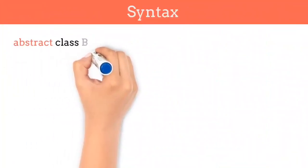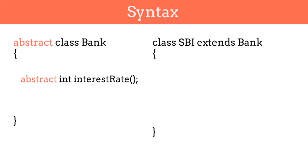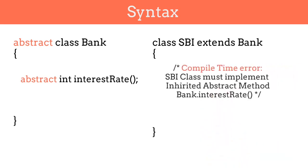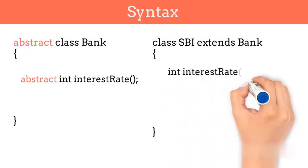Now let's see the syntax of abstract class. An abstract class is like a normal class with the abstract keyword at the beginning. Similarly, an abstract method is like a normal method with the abstract keyword at the beginning. As you can see on the screen, we have defined the abstract class Bank and abstract method rate of interest. All other classes will inherit it — for example, the SBI class can inherit the Bank class using the extends keyword. You can check out my video on inheritance for more information. If we don't define the interest rate method in the SBI class, Java will throw a compile time error saying that SBI class must implement the abstract method interest rate. To fix this error, we just have to implement the definition of the interest rate method in the SBI class.